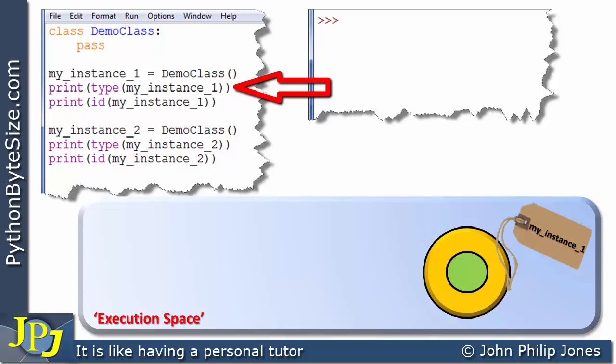If we look at this line, what this is going to do is print the type of my_instance_1. And if we look at the output, we can see that produces that particular ID. If I now come on to this line, well this is going to print the ID of my_instance_1. And if we look at the output, we can see that produces that particular ID.